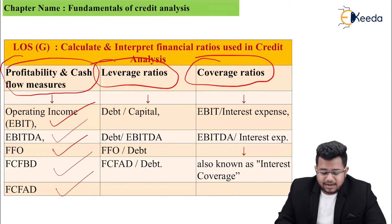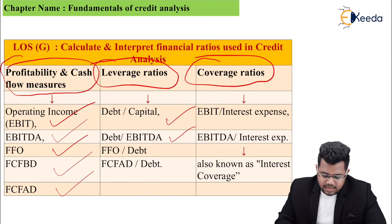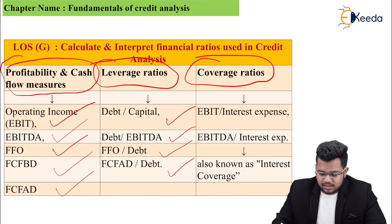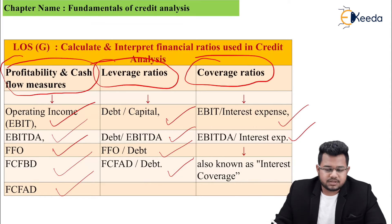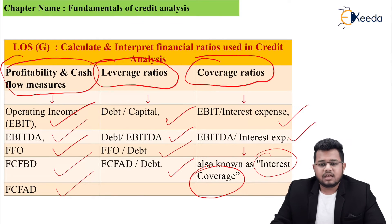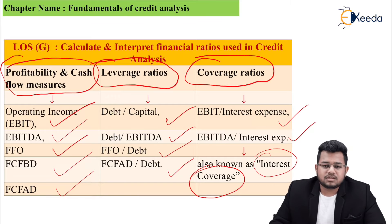Leverage ratios include: debt by capital, debt by EBITDA, FFO by debt, and FCFAD by debt. Coverage ratios include EBIT divided by interest expense or EBITDA divided by interest expense. EBITDA divided by interest expense is also called the interest coverage ratio. In FRA you studied that EBIT divided by interest was known as interest coverage ratio — both are valid.